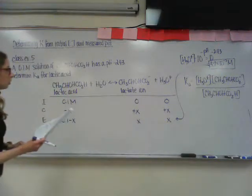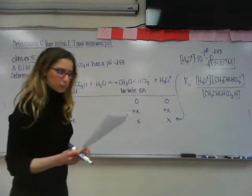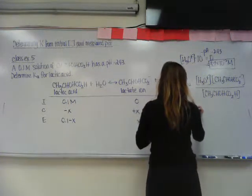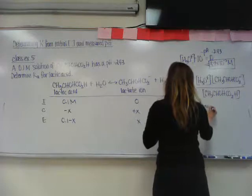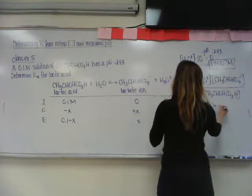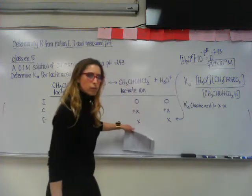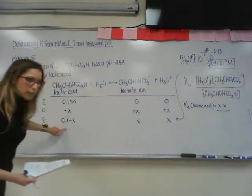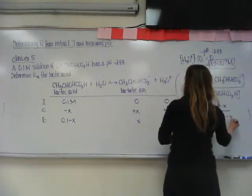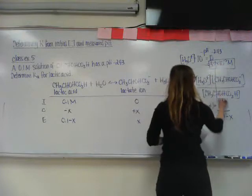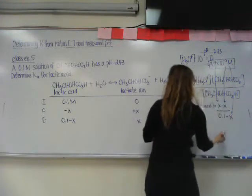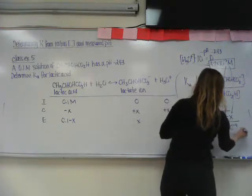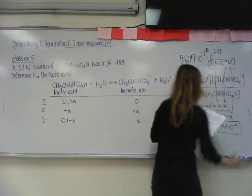So now, since we have all of that information, we can go ahead and put it in here. So your Ka for lactic acid is going to be x times x, and then that's divided by your 0.1 minus x. So we substitute this in for x, and you're going to end up with 1.4 times 10 to the negative 4 for the Ka.